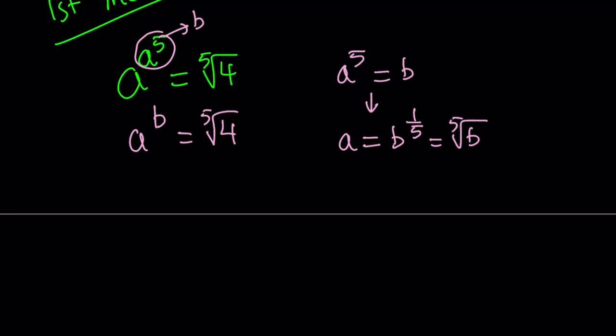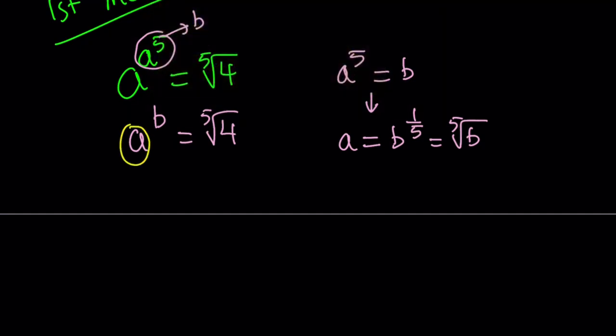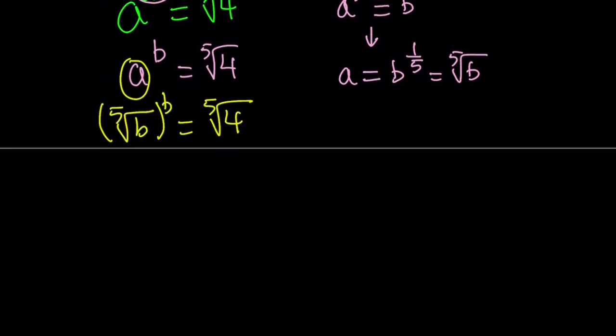So we have a in terms of b, the fifth root of b, and now we can go ahead and substitute that here. We can replace a with the fifth root of b and then raise it to the power b and set it equal to fifth root of 4. This is going to be a short video, so let's quickly go over these.